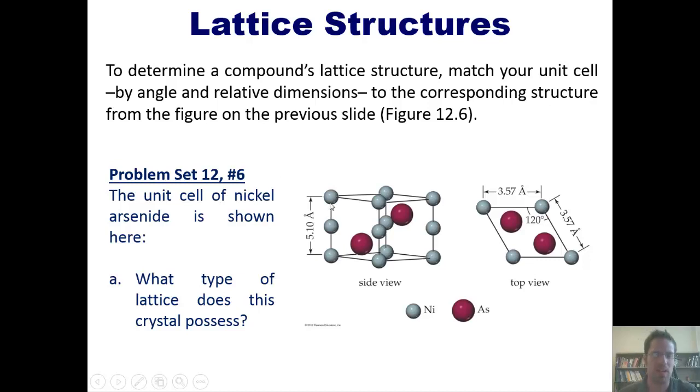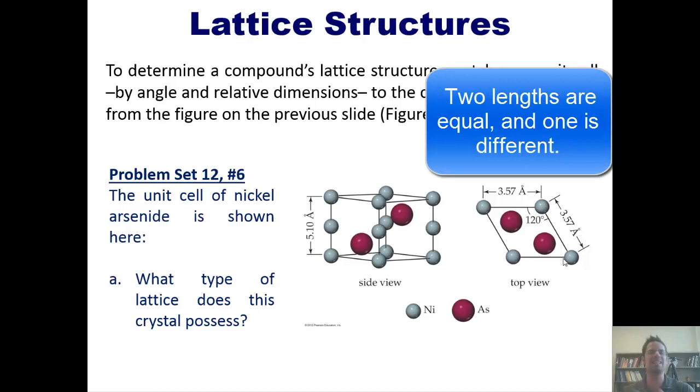As we examine them closely, we'll notice that the length of the unit cell is 5.10 angstroms, whereas the lengths of the upper rhombus are 3.57 and 3.57 angstroms. In other words, I've got a unit cell that has two lengths in it that are identical and a third length that is different. Keep that in mind.